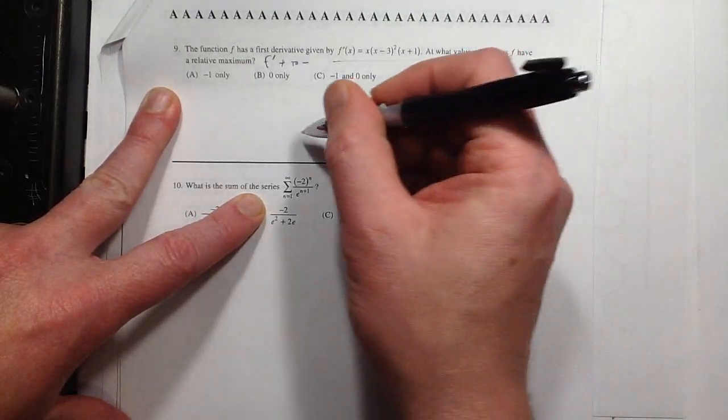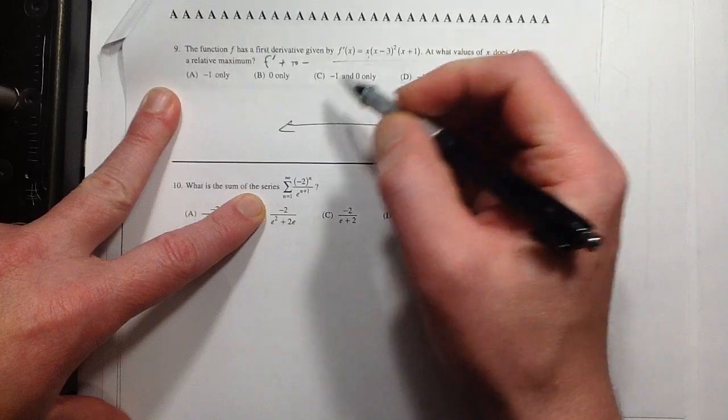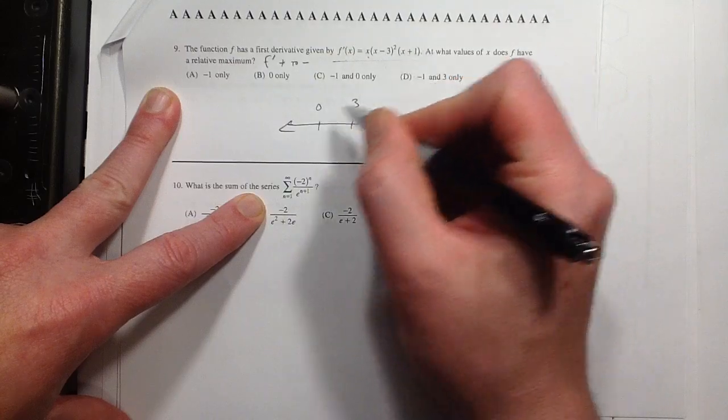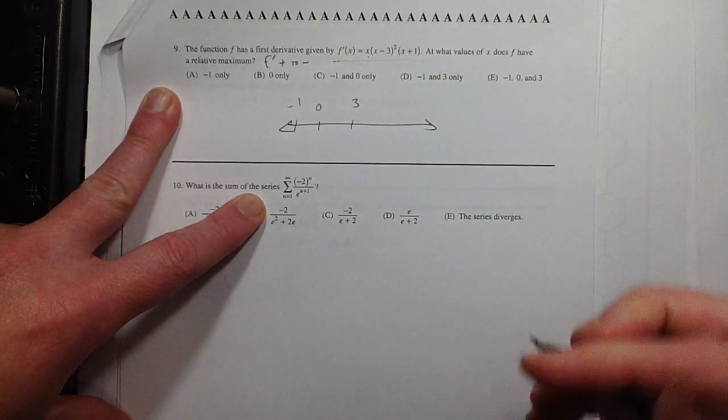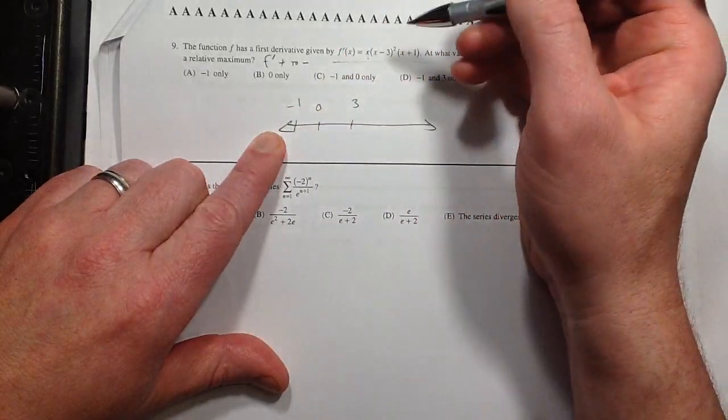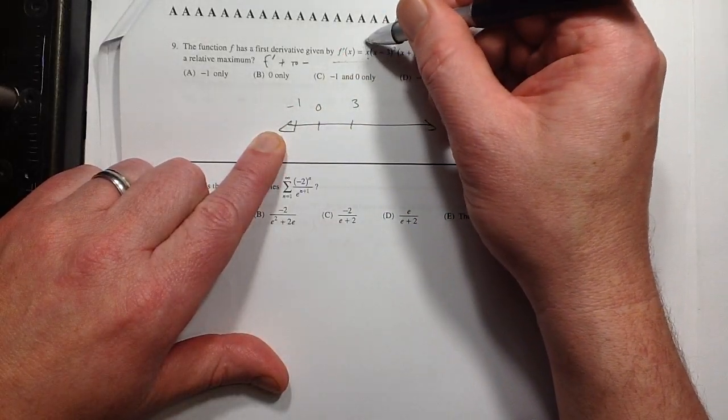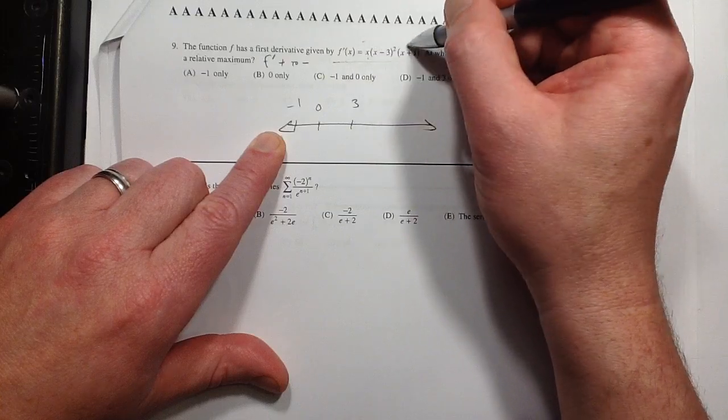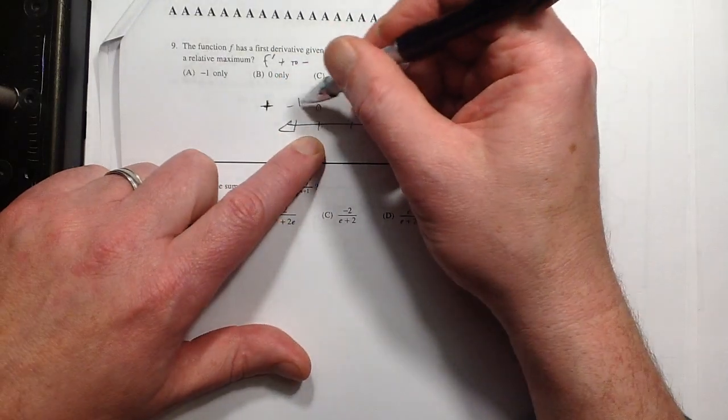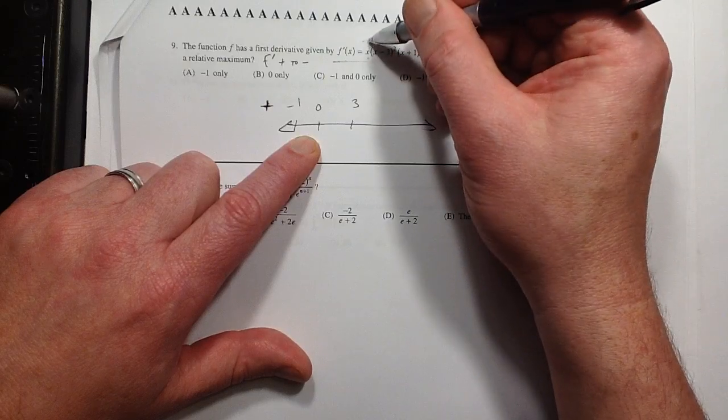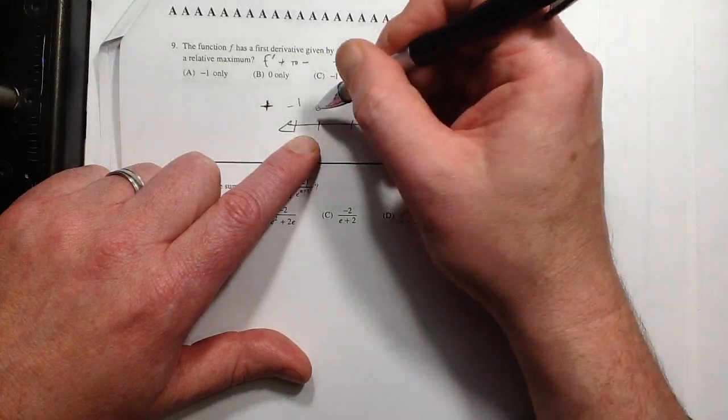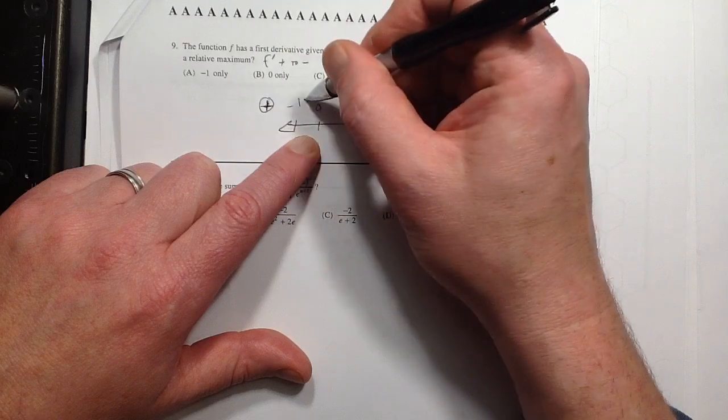So let's make a sign chart for that. x equals 0 needs to be on there, and 3 needs to be on there, and negative 1 needs to be on there. And let's just test values here. So if I plug in something lower than negative 1, like negative 2, I'd get a negative here. This is squared, so it's always positive, and I'd also get a negative here. Negative times negative is positive. And then in between negative 1 and 0, I'd get a negative here. This is always positive. This is also going to be positive now.